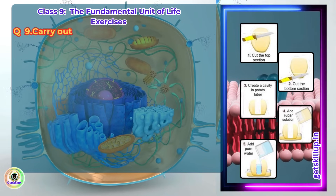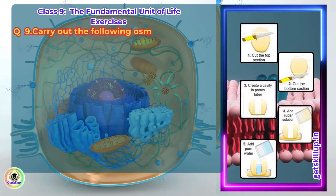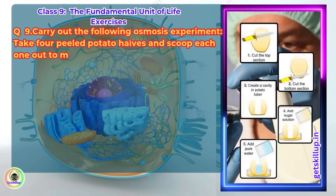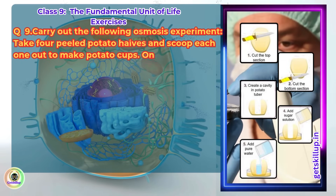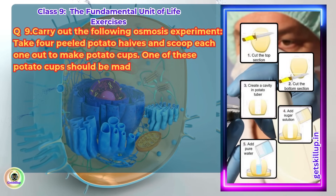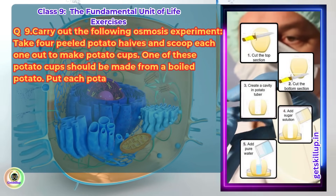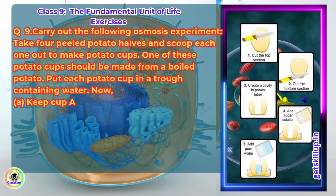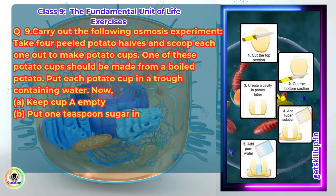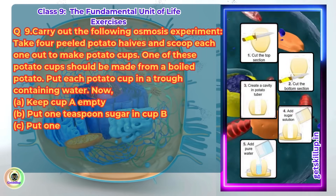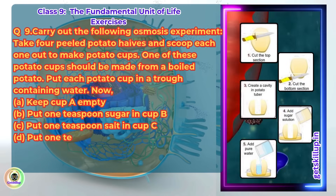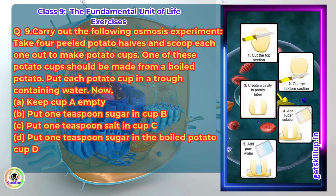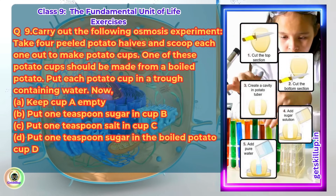Q9. Carry out the following osmosis experiment. Take 4 peeled potato halves and scoop each one out to make potato cups. One of these potato cups should be made from a boiled potato. Put each potato cup in a trough containing water. Keep cup A empty, put 1 teaspoon sugar in cup B, put 1 teaspoon salt in cup C, and put 1 teaspoon sugar in the boiled potato cup D. Keep these for 2 hours.